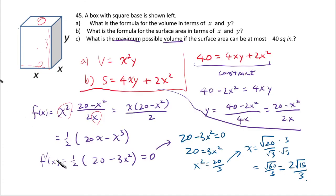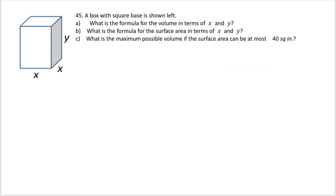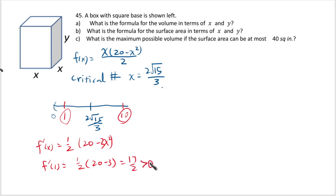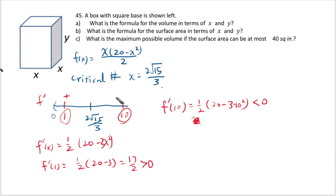f'(1) = (1/2)(20 − 3·1) = 17/2, which is positive, so f' is positive before the critical number. f'(10) = (1/2)(20 − 3·100) = (1/2)(−280), which is obviously negative. That means the function is increasing before and decreasing after, so x = 2√15/3 gives the absolute maximum.